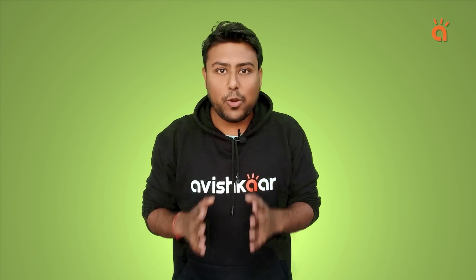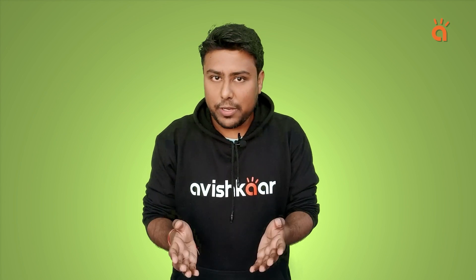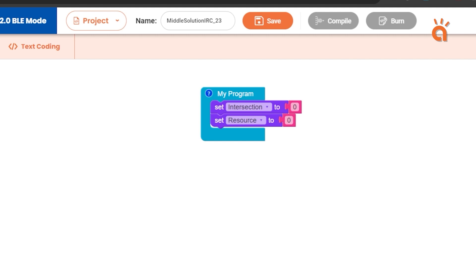Let's start coding the robot for the programmable mode. Initially, we will start with two variables. One for storing the count of black intersections and another for counting the resource placement.